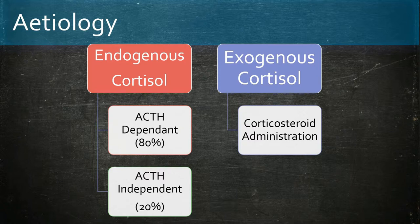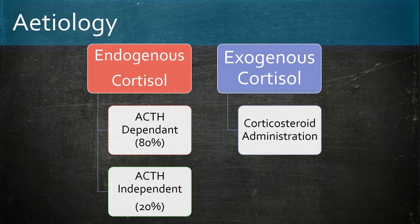Cushing's syndrome refers to free cortisol excess, but if this cortisol excess is caused by ACTH and subsequently by a pituitary adenoma, it is called Cushing's disease. 20% of the time, ACTH is produced in excess due to ectopic production from various cancers, including small cell lung cancer, bronchial cancer, phaeochromocytoma, and carcinoid tumors.